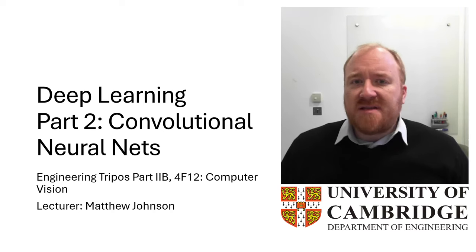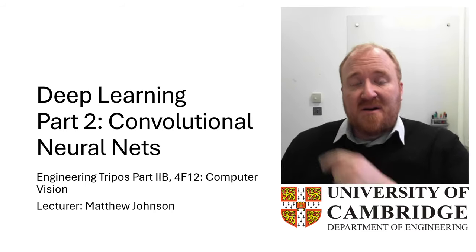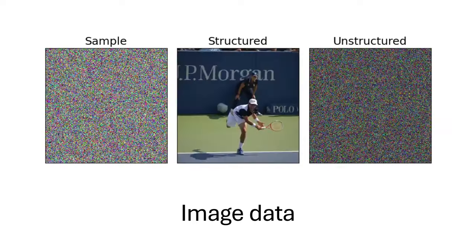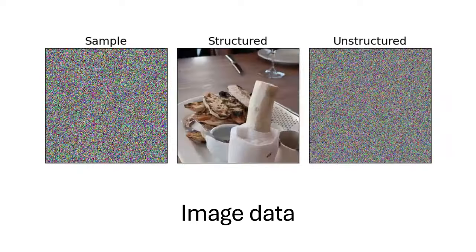If you missed the first lecture on multilayer perceptrons, you can access it via this link or via the link in the description. At the end of the previous lecture, we saw how there was a lot of structure in natural images.